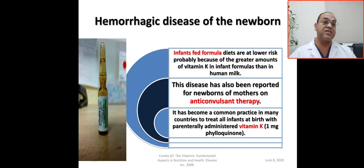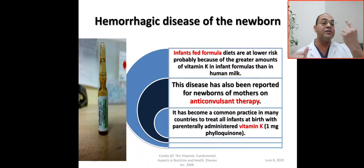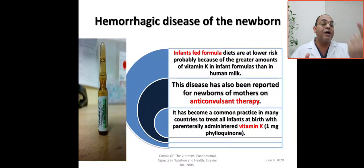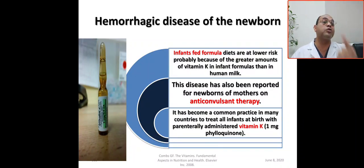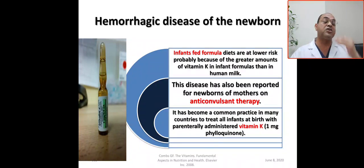The American Academy of Pediatrics recommends giving 1 mg intramuscularly as a single dose to all neonates. Although it seems like a small dose, 1 mg equals 1,000 times the daily requirement, so it provides long-term protection — especially for exclusively breastfed infants.